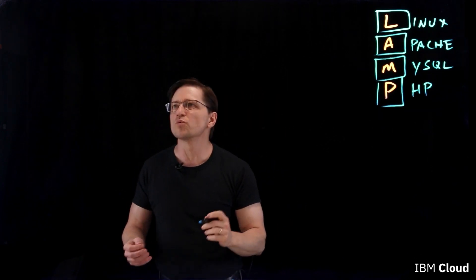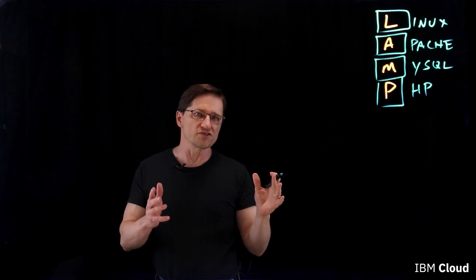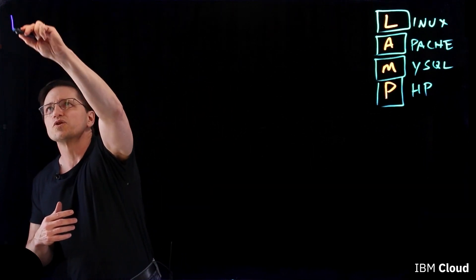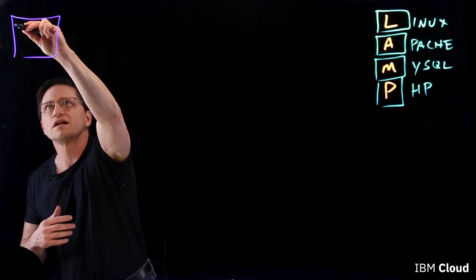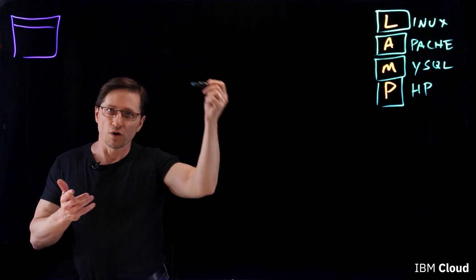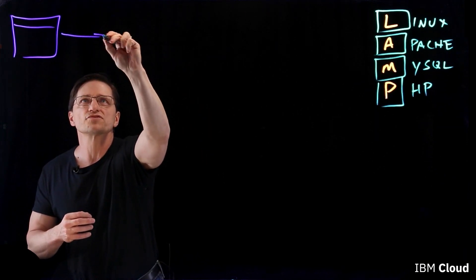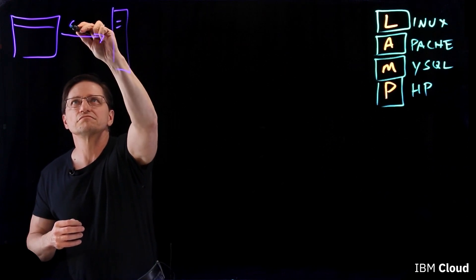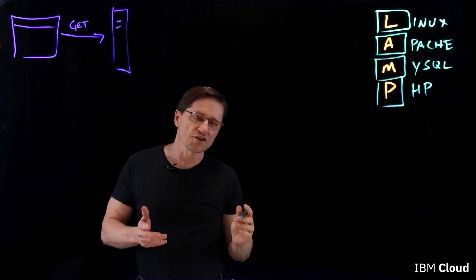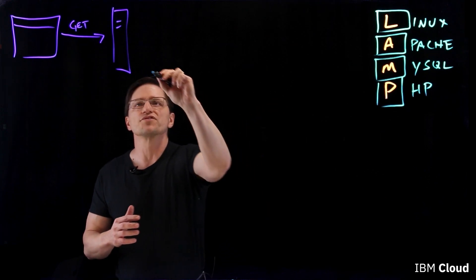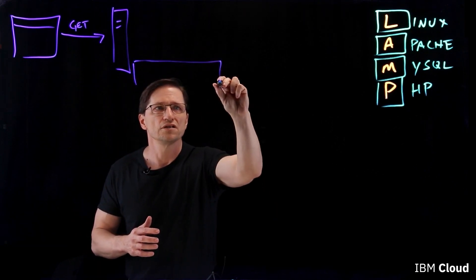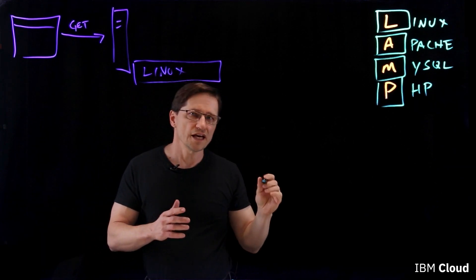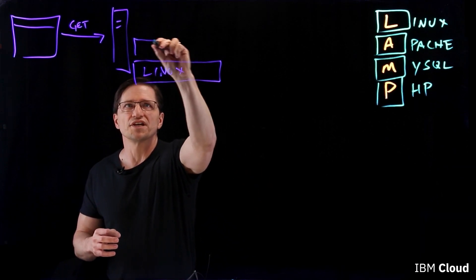To understand how these work together, let's do a simple example of what happened when we retrieved that page. So you were in your browser, and you made a URL, which does a GET request to a server. That is routed to a web server, in this case, Apache.